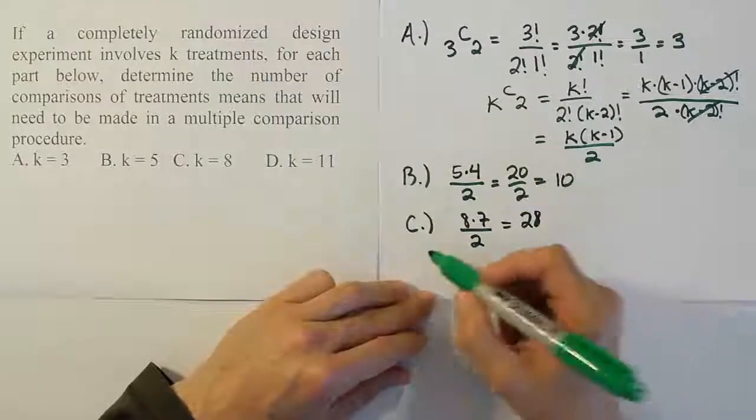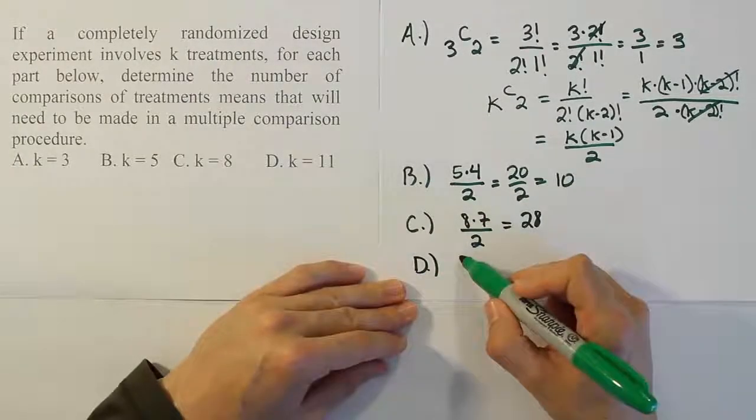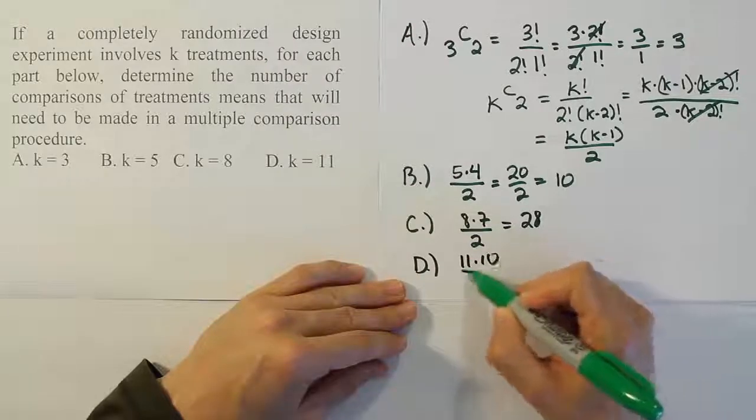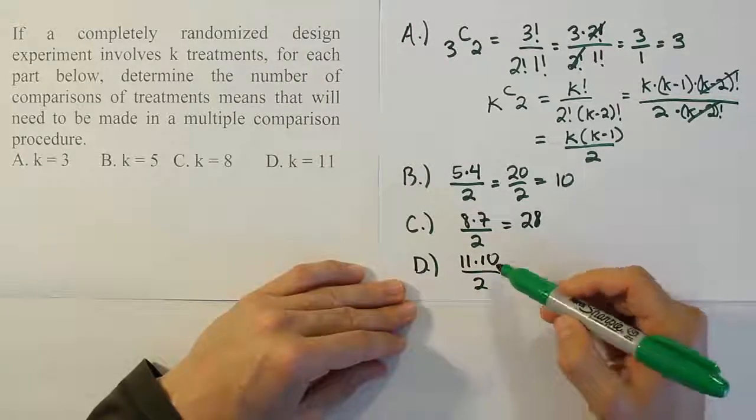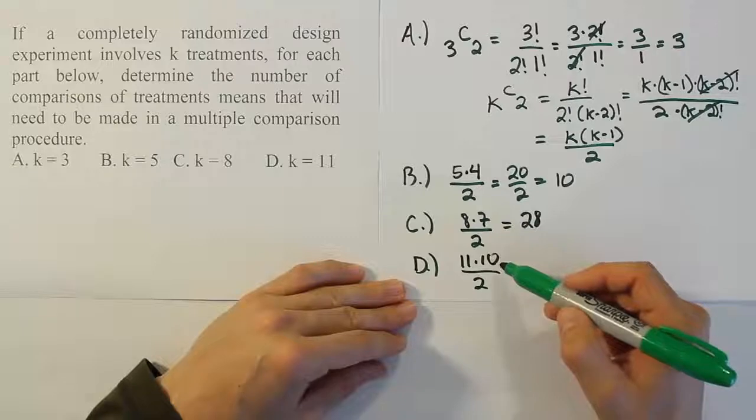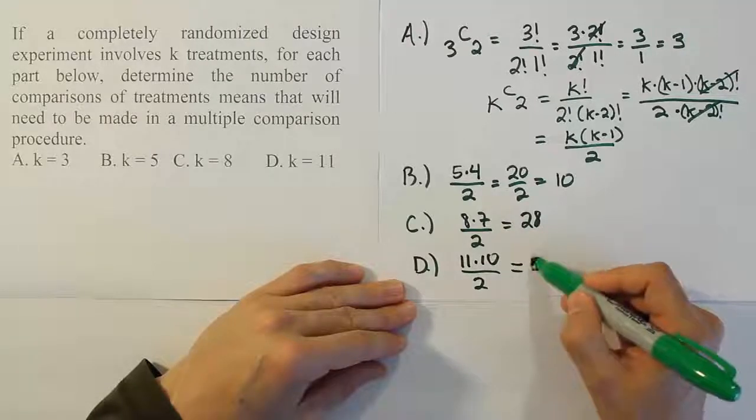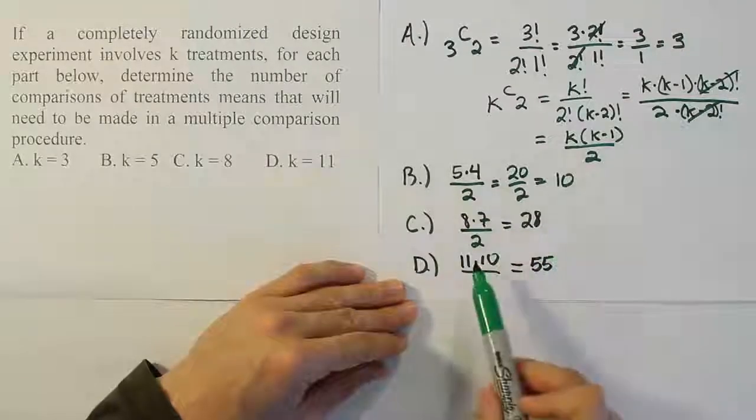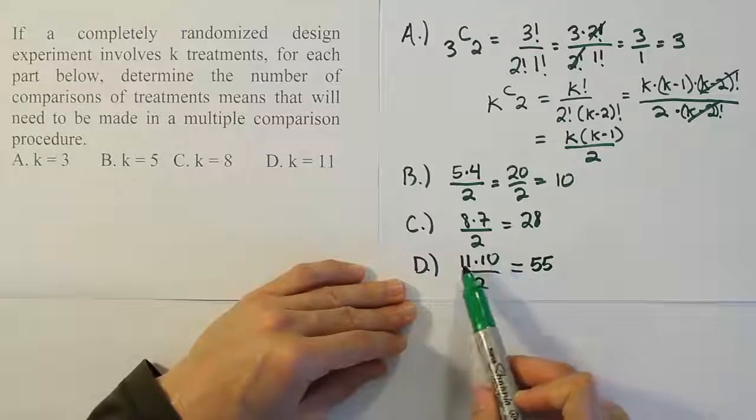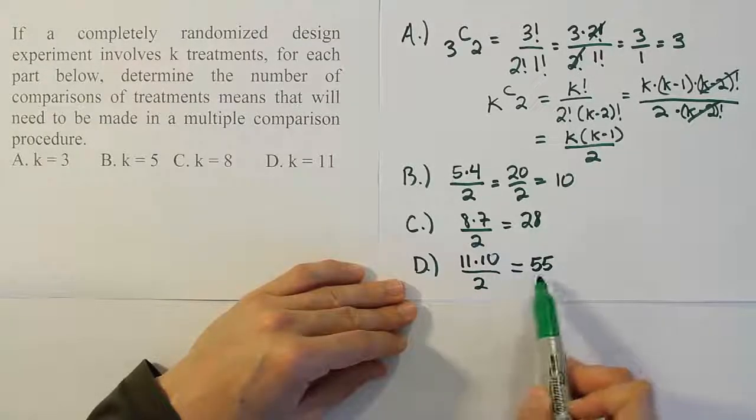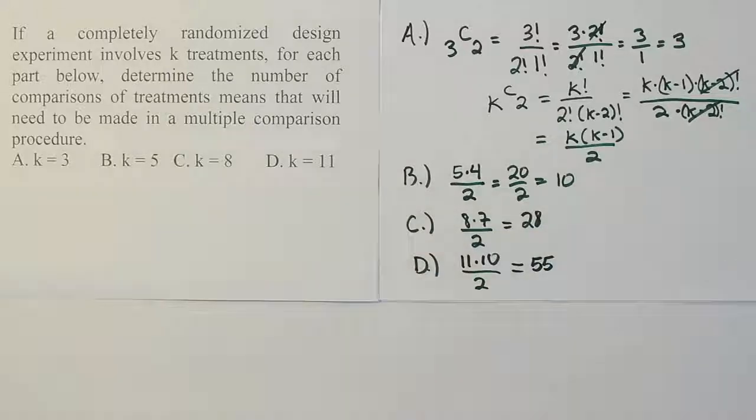Lastly, we have part D where k is 11. So it'll be 11 times 10 over 2. You could put 2 into 10, which gives you 5, and 5 times 11 gives you 55. Or you could have said 11 times 10 is 110, divided by 2 is also 55.